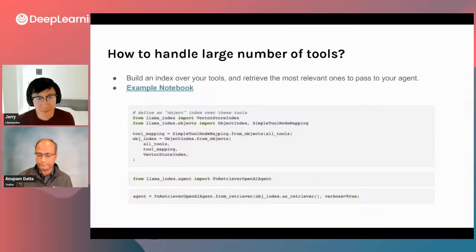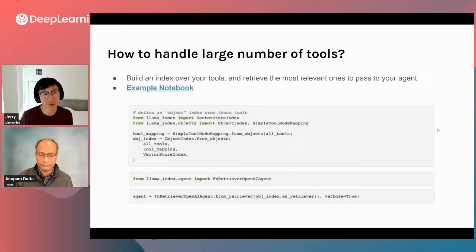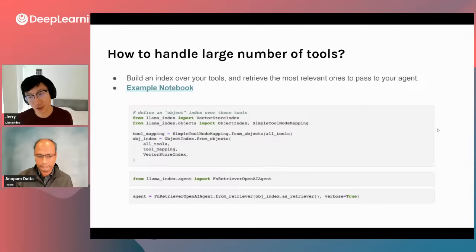Another problem is that agents tend to struggle when you overload them with tools. If you have more than around five tools — and in the limit you might have hundreds, thousands, or even millions — at a certain point this won't fit into your context window. What you can do is index the tools themselves — index the metadata of the tools — and then during query time, first do search and retrieval over the relevant tools, then pass those to your agent. These are general considerations; we'll also cover some best practices for constructing agents at the end.